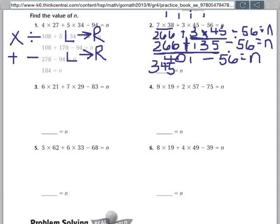So I'm going to do one more. Number 3 says 6 times 21 plus 7 times 29 minus 83. So I'm going to first look for a multiplication or division problem going left to right. Left to right, my first one that I see is 6 times 21. When I do 6 times 21, that gives me 126. And then I just fill in the problem with the numbers that are left. So plus 7 times 29 minus 83 equals n.